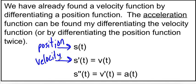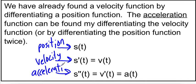Now, if we want to know how fast the velocity is changing — we want to know the acceleration of an object — we take the derivative of the velocity function, which is the second derivative of the position function. This gives us the acceleration function. So: the first derivative of position is velocity, the second derivative is acceleration, because velocity is how fast position changes with respect to time, and acceleration is how fast velocity changes with respect to time.